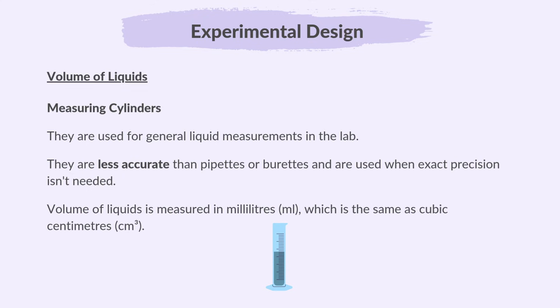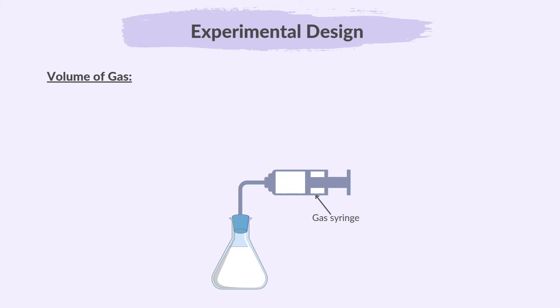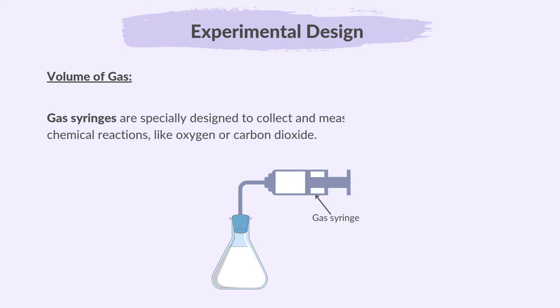Volume of liquids is measured in millilitres, which is the same as cubic centimetres. If we want to measure the volume of a gas, we may use a gas syringe. Gas syringes are specially designed to collect and measure gases produced during chemical reactions, like oxygen or carbon dioxide.